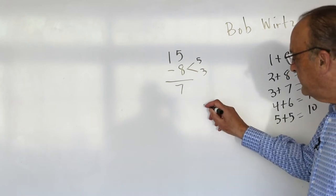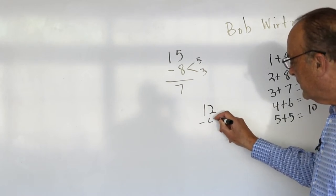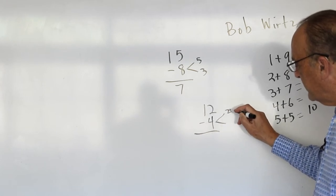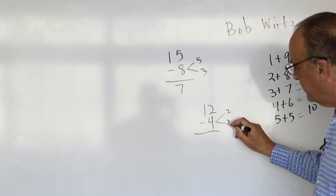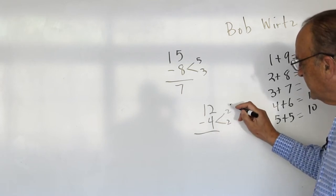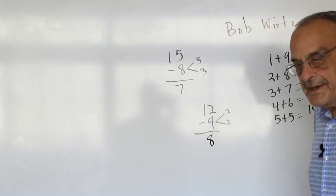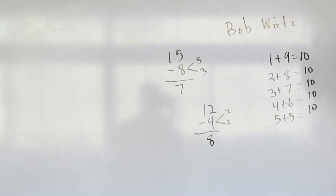So another quick example would be 12 minus 4, sideways V. Whatever this number is, you use the same number there. Then 2 plus something is 4, 2 plus 2 is 4. So 12 minus 2 is 10, 10 minus 2 is 8. You can say take away instead of minus if you want.